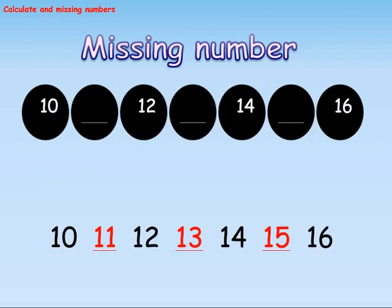Missing number sequence: 10, dash, 12, dash, 14, dash, 16. The missing numbers from the given sequence are marked red. That is, the missing numbers are 11, 13, and 15.